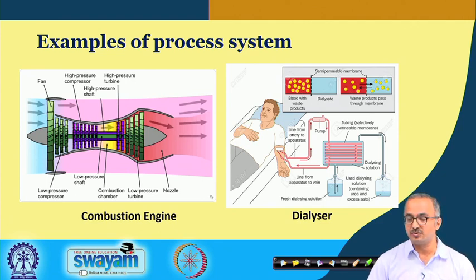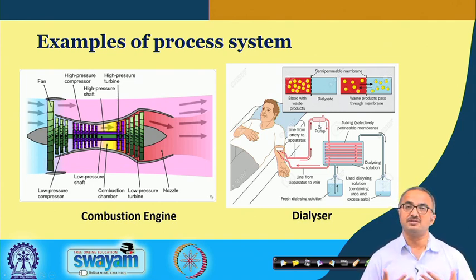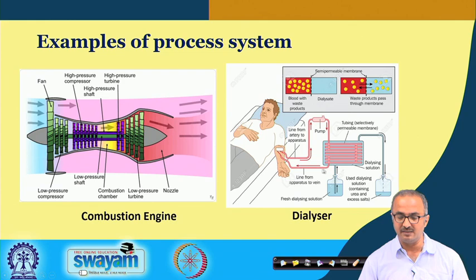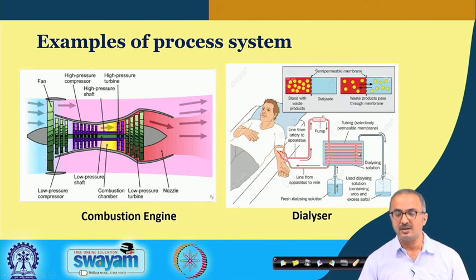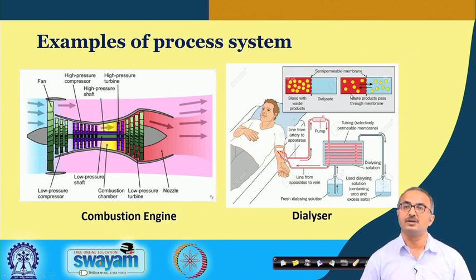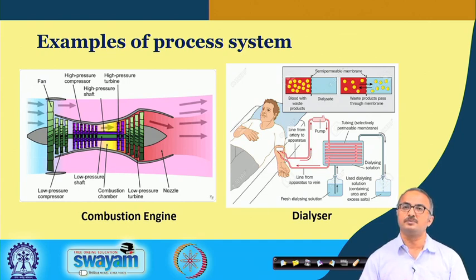We come to the dialyzer. Blood is taken from a patient and purified artificially because the kidney or lungs may not be working. The blood is put through a dialyzer, purified, and sent back. Dialyzing solutions help maintain the balance of minerals like sodium and potassium. From the balance point of view, we need to figure out how much impurities come out, how they are separated, and whether there is any energy exchange during separation — all these processes need to be considered to design and analyze this kind of system.